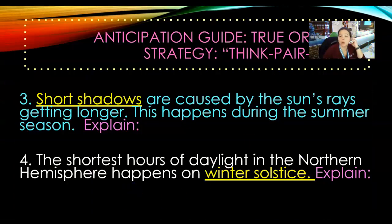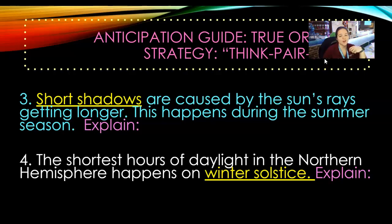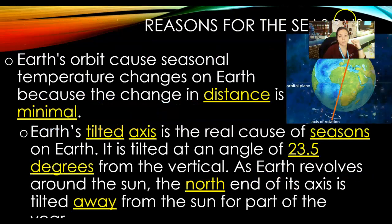Flip to the anticipation guide back page two. Remember, two faults on the left-hand side, on the before side. Short shadows are caused by the sun's rays getting longer — this happens during the summer season: true or false. Number four: the shortest hours of daylight in the northern hemisphere happen on the winter solstice — true or false. All right, that's good too.